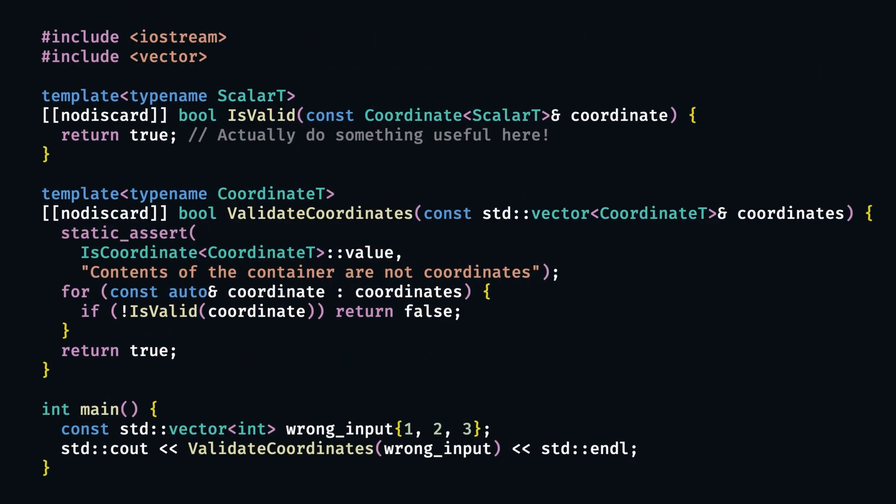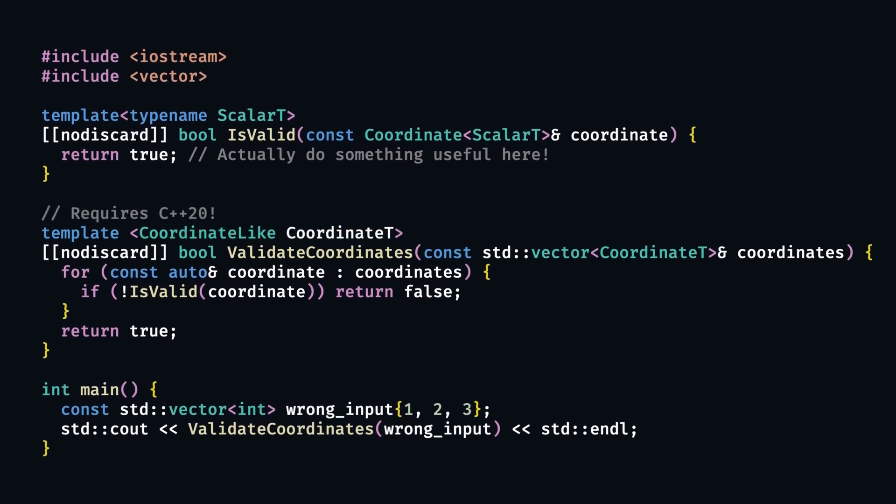As a short introduction, concepts will allow us to write code that looks something like this instead — note the change from the typename keyword to a concept CoordinateLike, which defines a set of rules that a type must conform to in order to be accepted for this template. This function, if we pass a wrong type into it, will generate a similarly nice error message. But we're getting ahead of ourselves — for now, we're interested in implementing such an is_coordinate trait and seeing any limitations we encounter along the way.